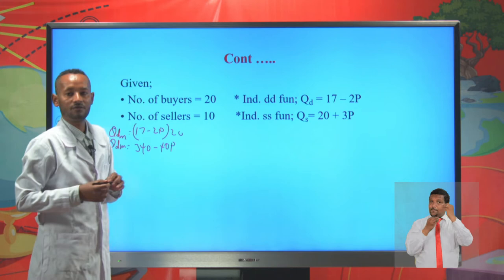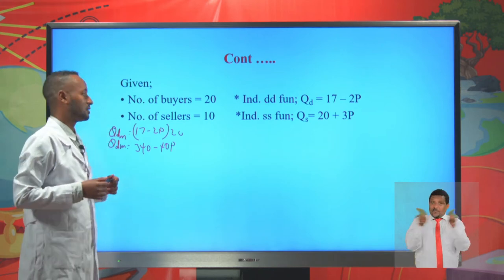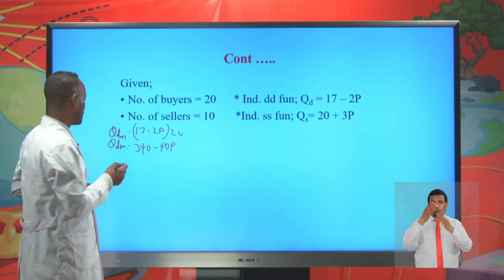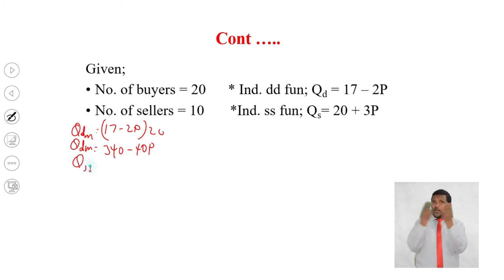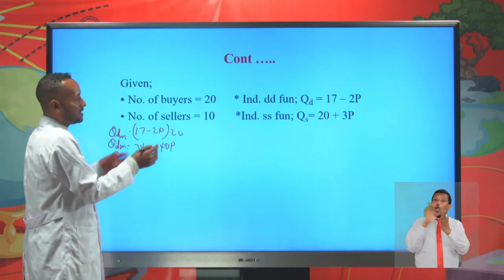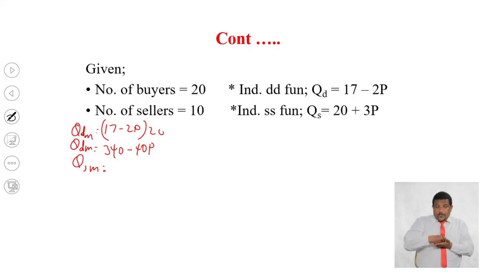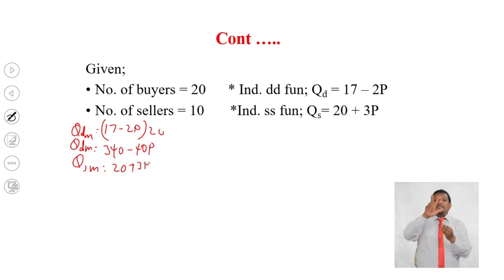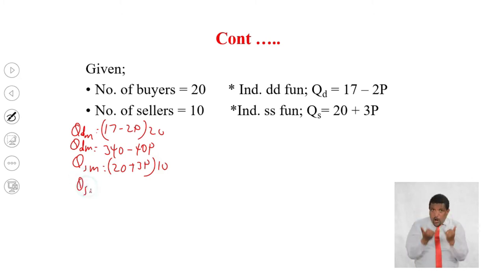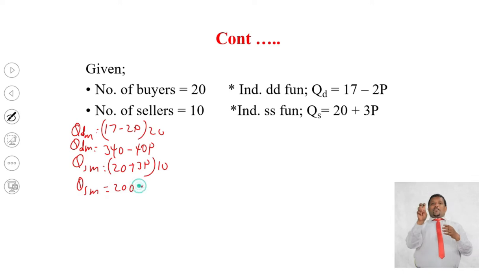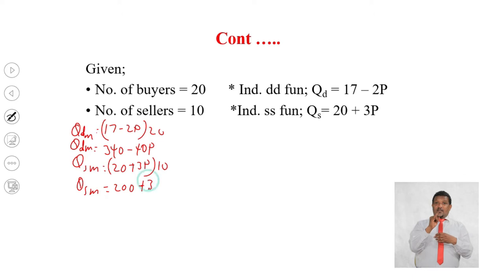Similarly, if you have the number of sellers and the individual supply function, you can calculate the market supply function by multiplying the individual supply function by the number of sellers. The individual supply function is 20 plus 3P, multiplied by 10 sellers. So the market supply function is 200 plus 30P.